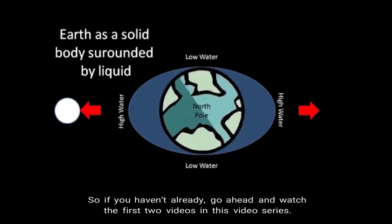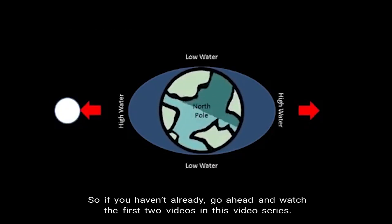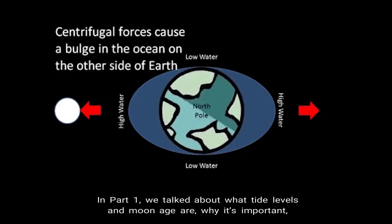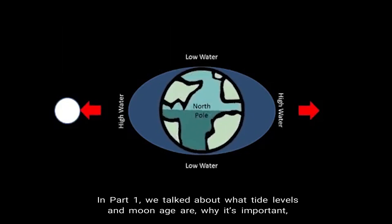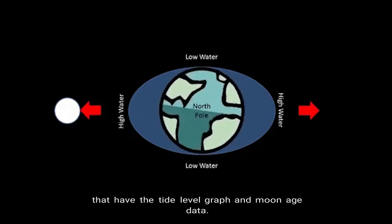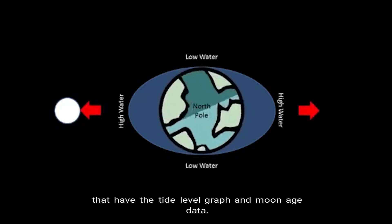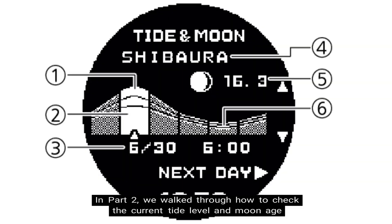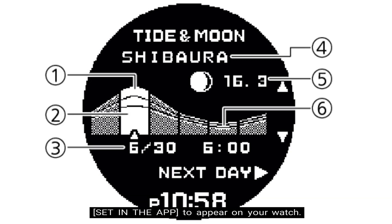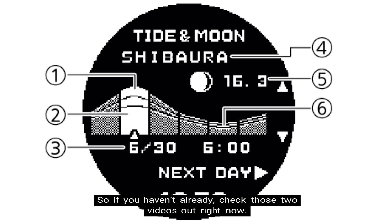If you haven't already, go ahead and watch the first two videos in this video series. In part one we talked about what tide levels and moon age are, why it's important, how you may find it useful, and we gave you a list of other G-Shock watches that have the tide level graph and moon age data. In part two we walked through how to check the current tide level and moon age on your Rangeman and how to avoid the error message set in the app to appear on your watch. So if you haven't already, go ahead and check those two videos out.